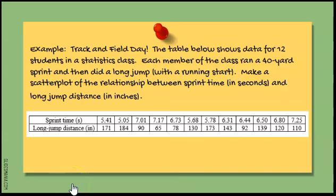Track and field day. The table below shows the data for 12 students in a statistics class. Each member ran a 40-yard sprint and then did a long jump with their running start. Make a scatterplot of the relationship between sprint time in seconds and long jump in distance. I'm going to make my scatterplot, and I know my explanatory variable is sprint time and my response variable is the long jump distance. Before I draw my graph, I want to look at my data. What's the smallest sprint time? What's the highest sprint time? My smallest sprint time is 5.05 seconds and my highest is 7.25.